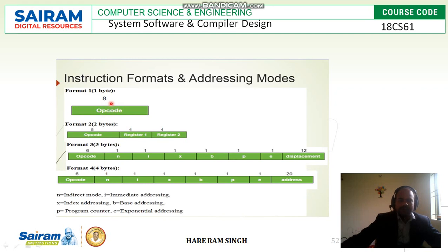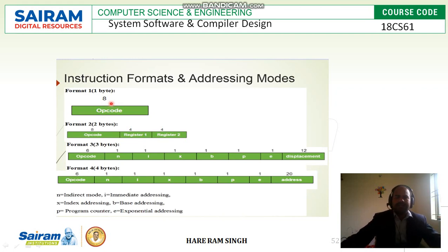In format 3, the first bits are for the opcode, then the flag bits: N (indirect addressing), I (immediate), X (index addressing), B (base addressing), P (program counter), and E (extended addressing). Format 4 is 4 bytes (32 bits), with the same N, I, X, B, P, E flag structure.